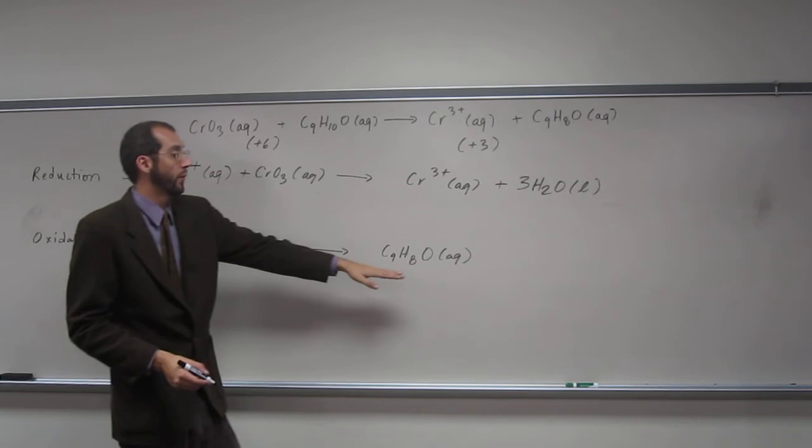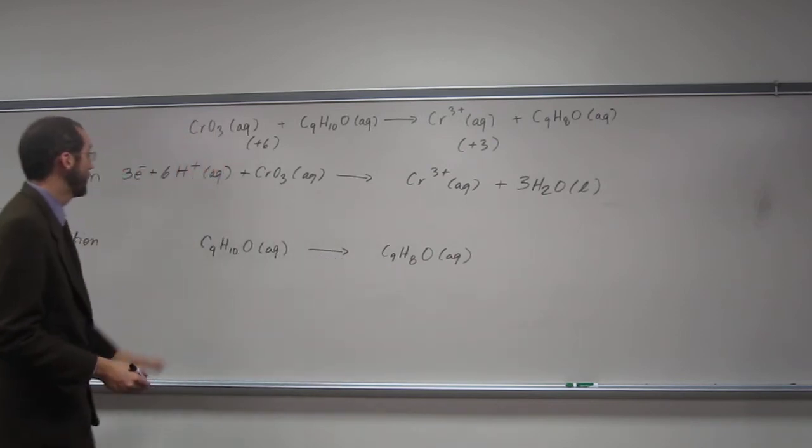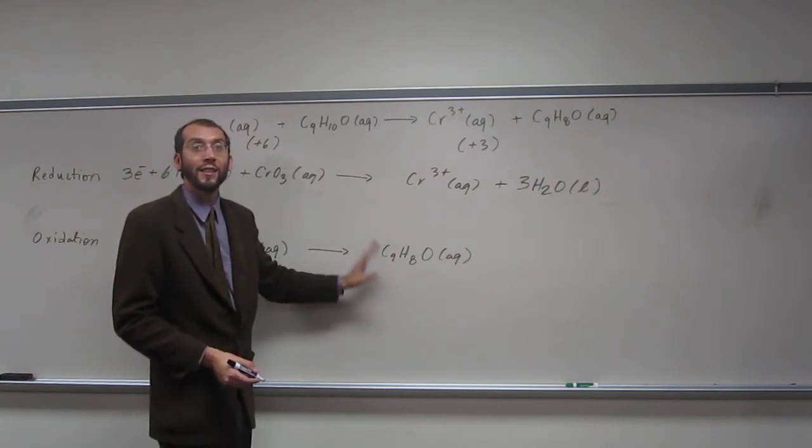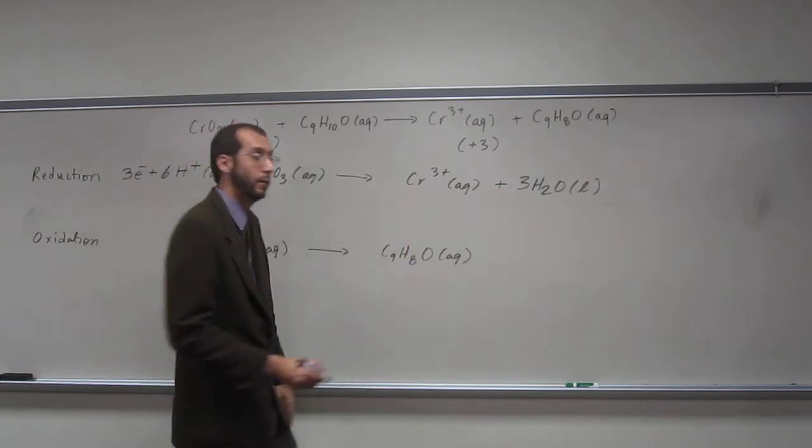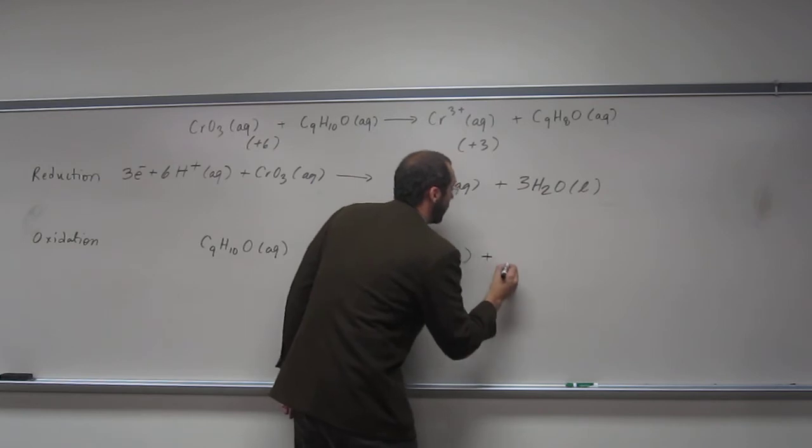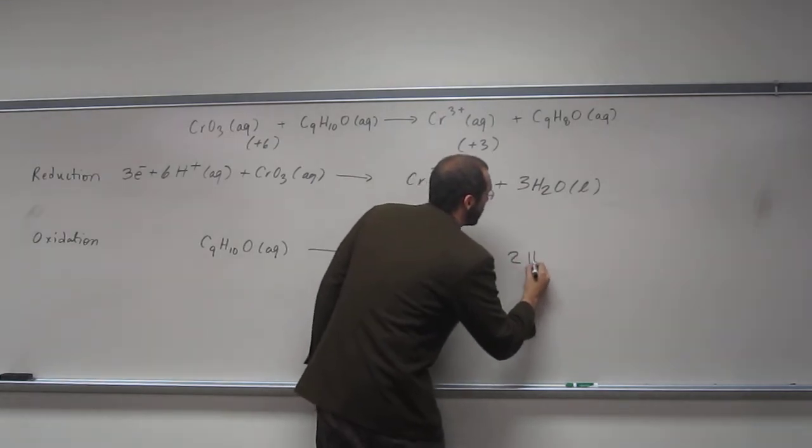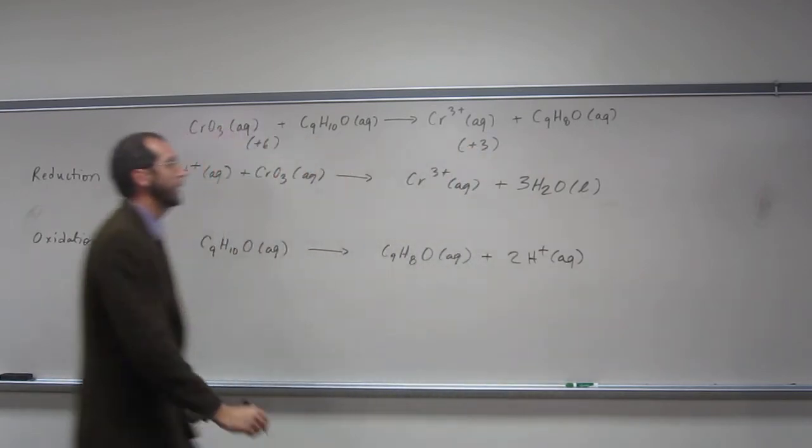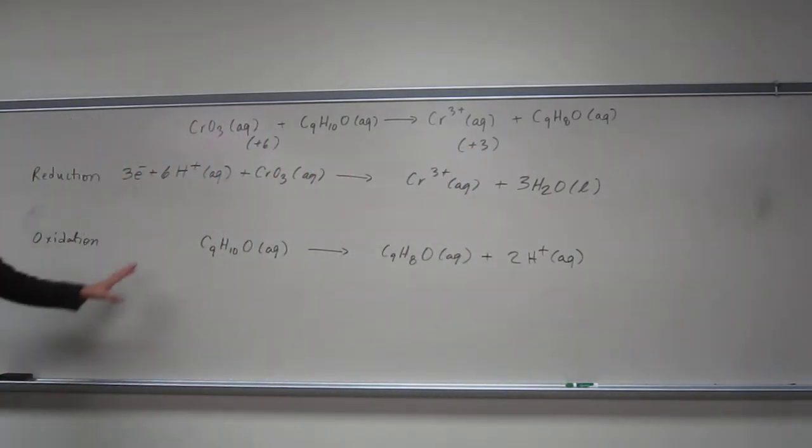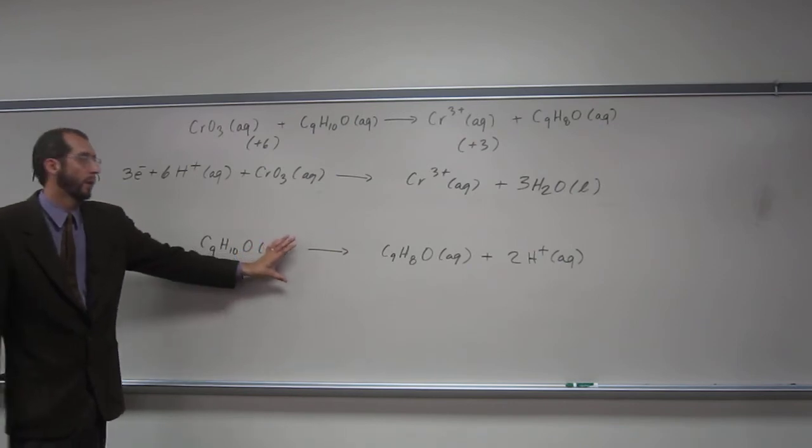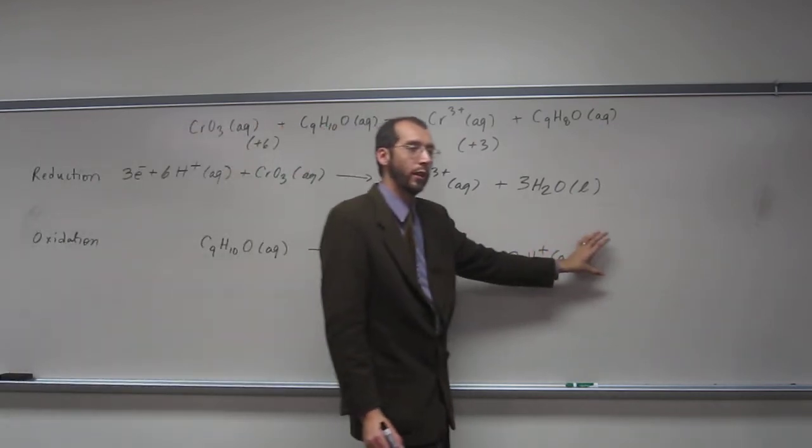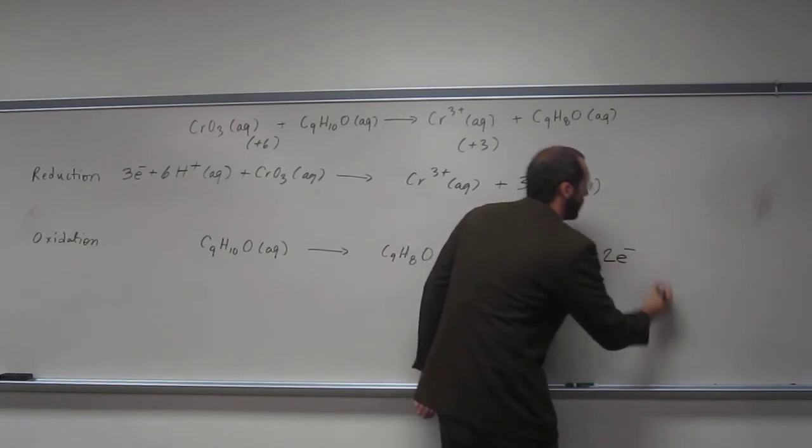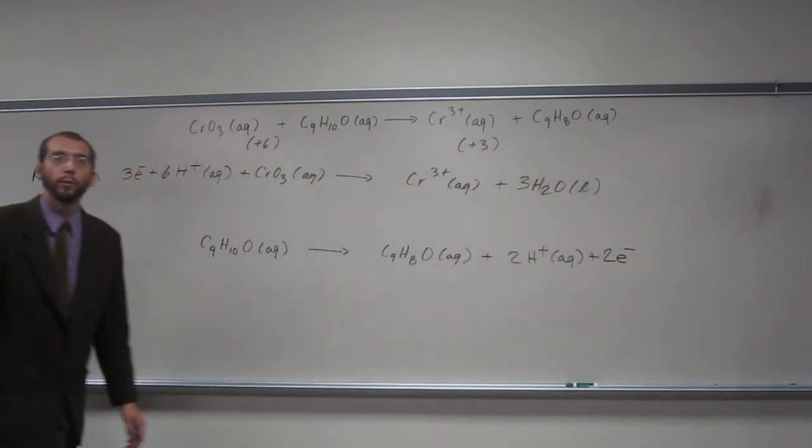Here, we have no balance. 10H is here, 8H is here. We recover from that by adding H+. So we're going to add two H+, or protons. Now we have a zero charge over here, but a +2 charge over here. So we're going to add two electrons.